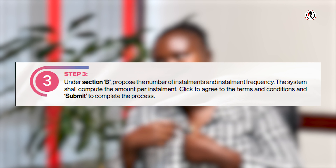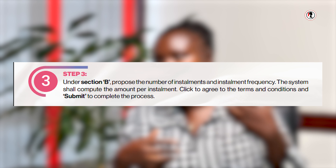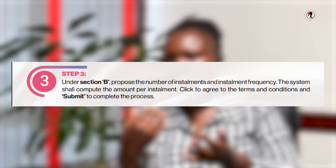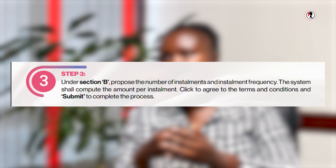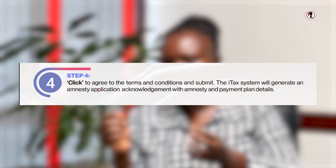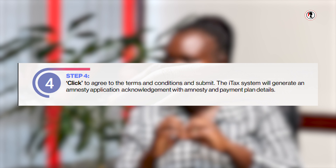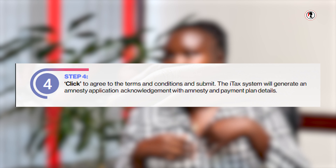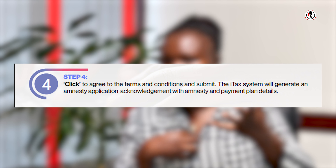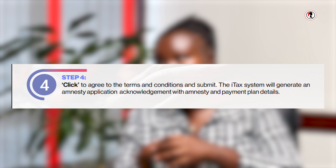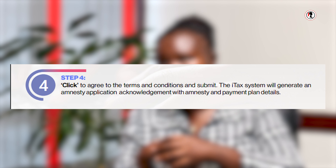The second tab tells you to select the number of installments you want. Unfortunately, we now have only two remaining — when we started we had nine. After that, click agree to the terms and conditions then submit. Immediately after you submit, you get an acknowledgement telling you that your amnesty application has been received.